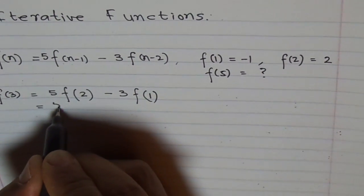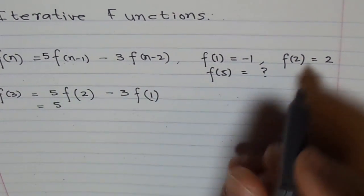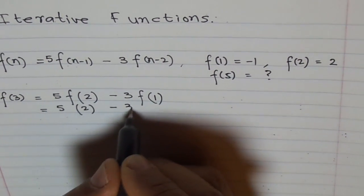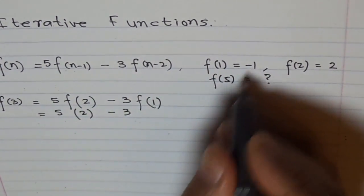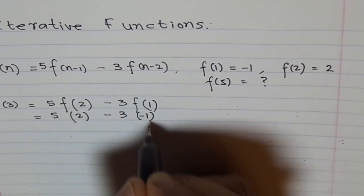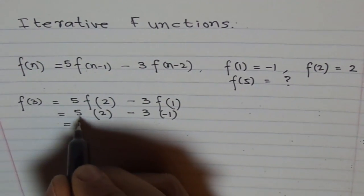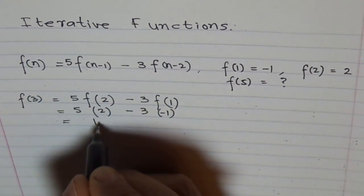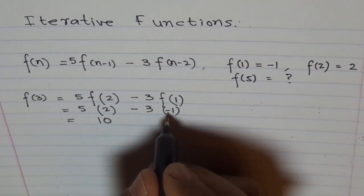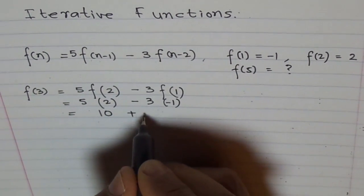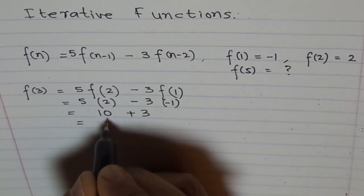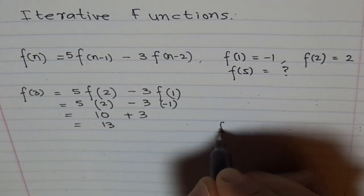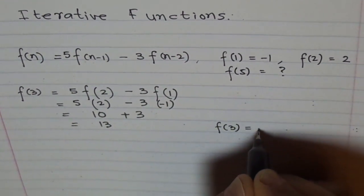Now, what is f(2)? It is given as plus 2, so we will write this as 2. Minus 3 times f(1), which is -1. We will write -1 here. And calculate 2 times 5, which is 10. And minus times minus is plus, so we get plus 3. So 10 plus 3 is 13. So f(3) for us equals to 13.